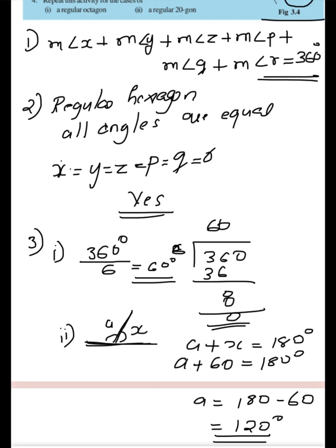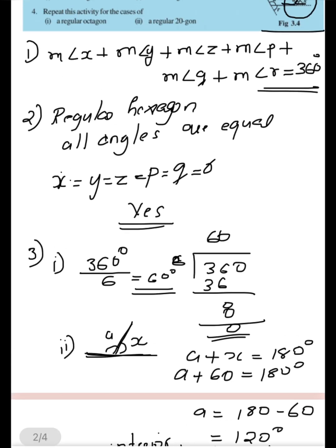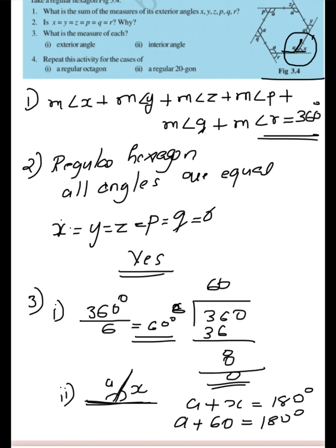Therefore, a = 180 − 60 = 120 degrees. The interior angle is 120 degrees. You can subtract the exterior angle from 180 because the interior and exterior angle form a linear pair — this applies at every vertex: a and y, a and z, p and a, q and a, a and r.